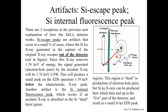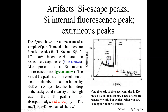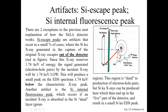Another artifact is the silicon internal fluorescence peak, which occurs when the incident x-ray is absorbed in the silicon dead layer — the green region shown on the slide. That region is dead to the production of electron-hole pairs, but silicon K-alpha x-rays can be produced there, which then end up in the active part of the detector and result in a small silicon K-alpha EDS peak, indicated by the green arrow.